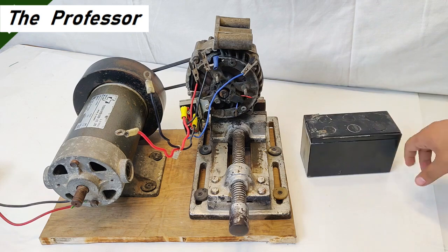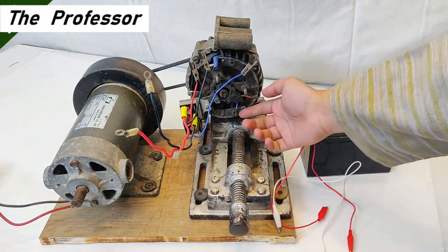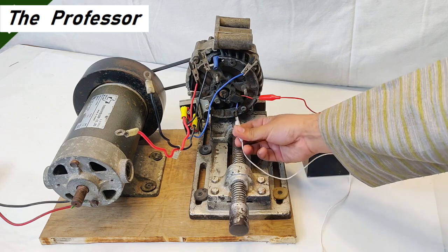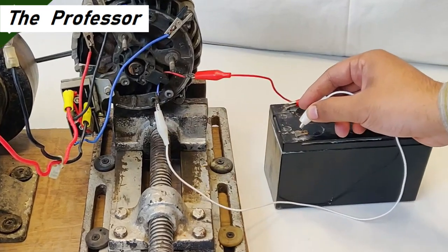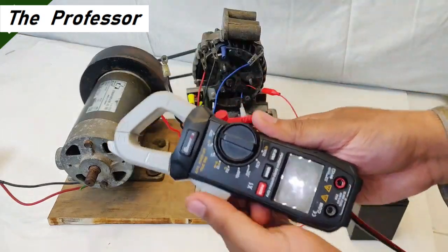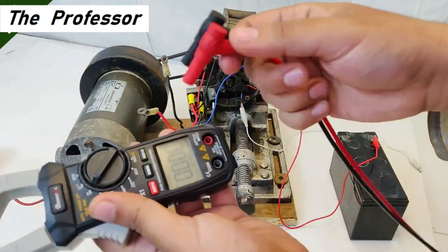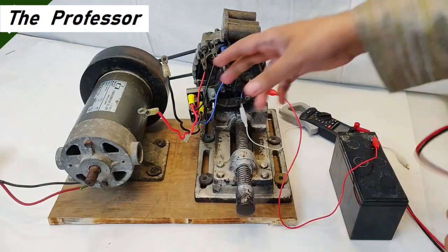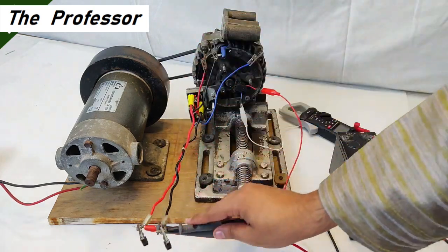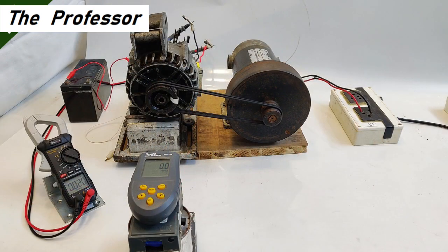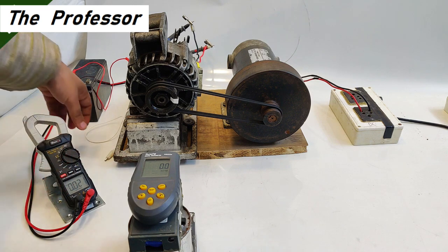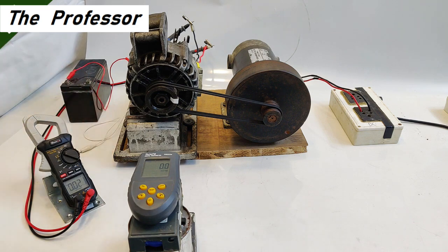Now it's time to connect this 12 volts UPS battery and these jumper cables to the rotor winding terminals of this alternator. Red will be connected to red, blue is going to be negative, although polarity does not matter here. The connection has been made. Before starting the machine, let's point the meter towards voltage measurement mode and connect the pins to the output terminals of the alternator.